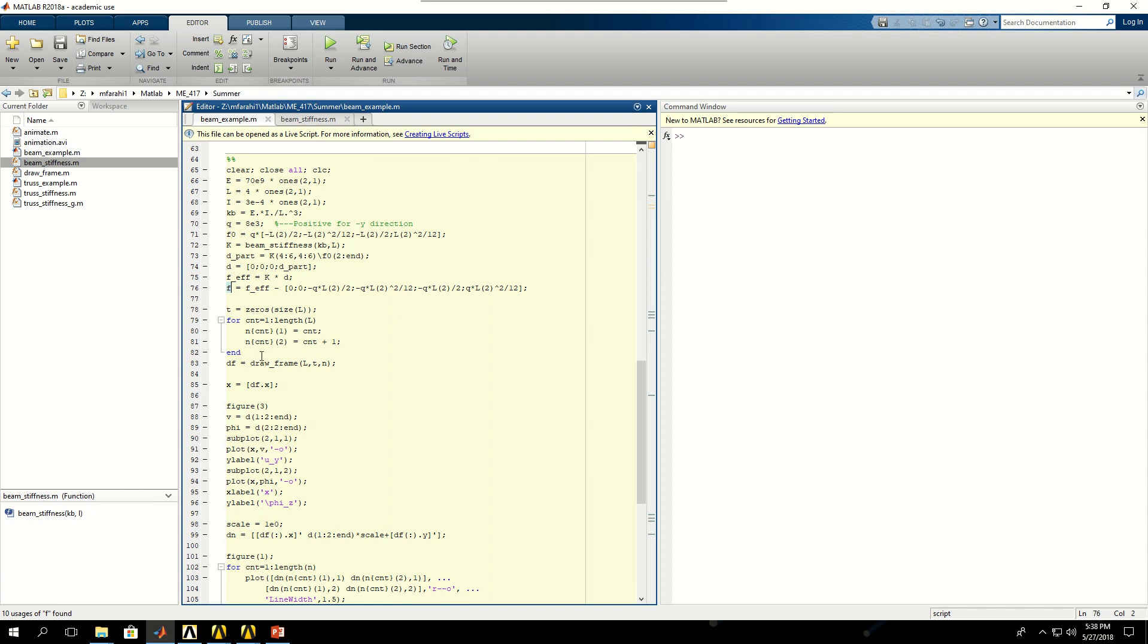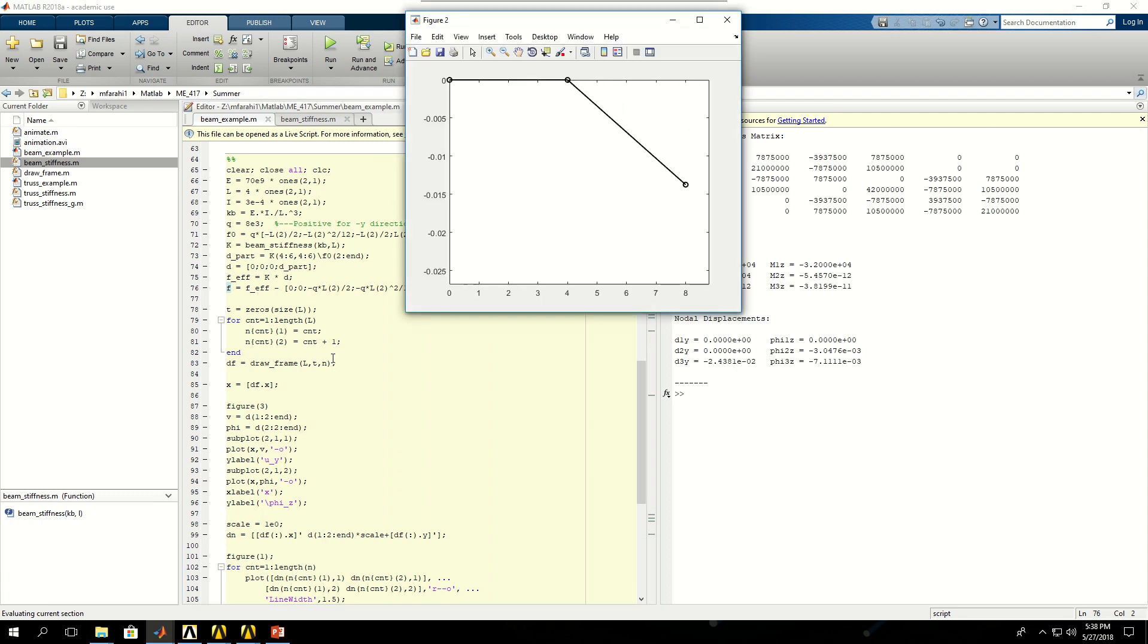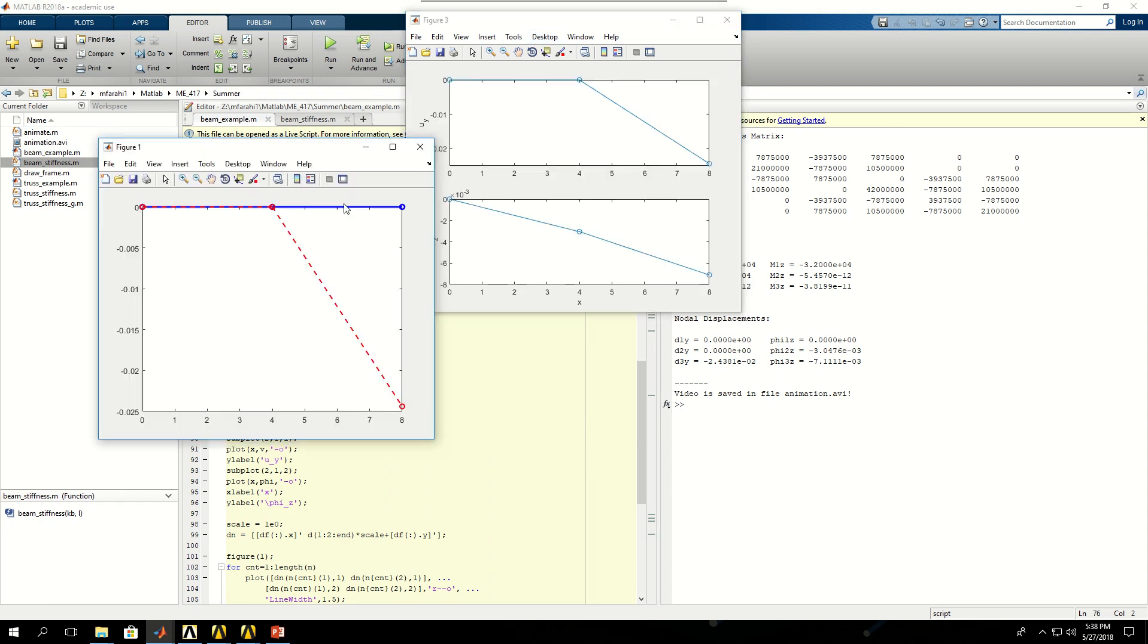The rest is basically some creative coding to draw the beam and do animation. If I run it, it shows animation and the displacement of the beam. However, this is not a very accurate model because we only have three nodes. Along the length of the beam there's going to be more displacements and rotations which we're not seeing because we don't have nodes there.